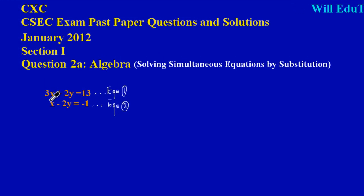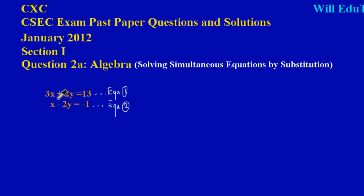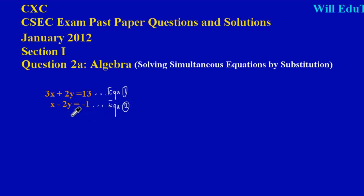Here we have our two equations. In the first equation we have 3x plus 2y is equal to 13, and I've labeled that equation number one. In the second equation we have x minus 2y is equal to negative one, and I've labeled that equation number two.